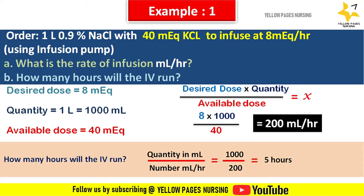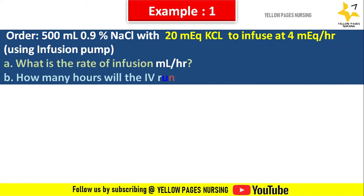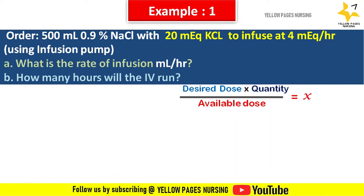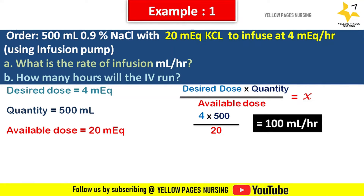Next example using the formula method: Doctor's order — 500 ml 0.9% sodium chloride with 20 milliequivalent KCL to infuse at 4 milliequivalent per hour using an infusion pump. What is the rate of infusion in ml per hour? Desired dose = 4 mEq, quantity = 500 ml, available dose = 20 mEq. Applying the formula: 4 × 500 ÷ 20 = 100 ml per hour.